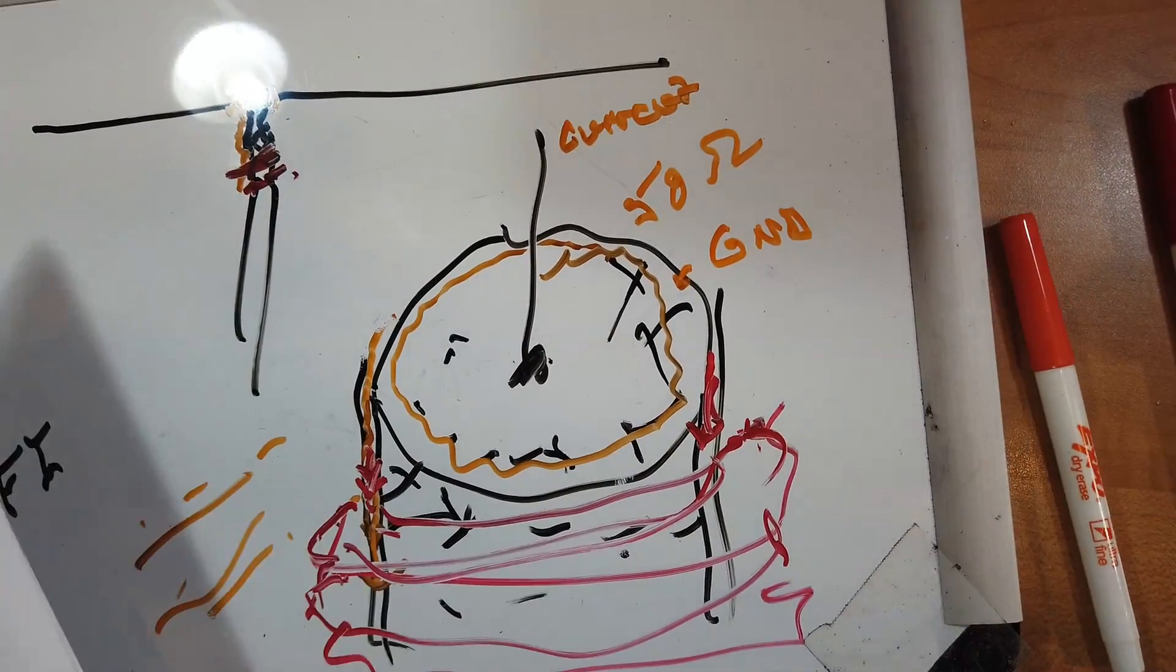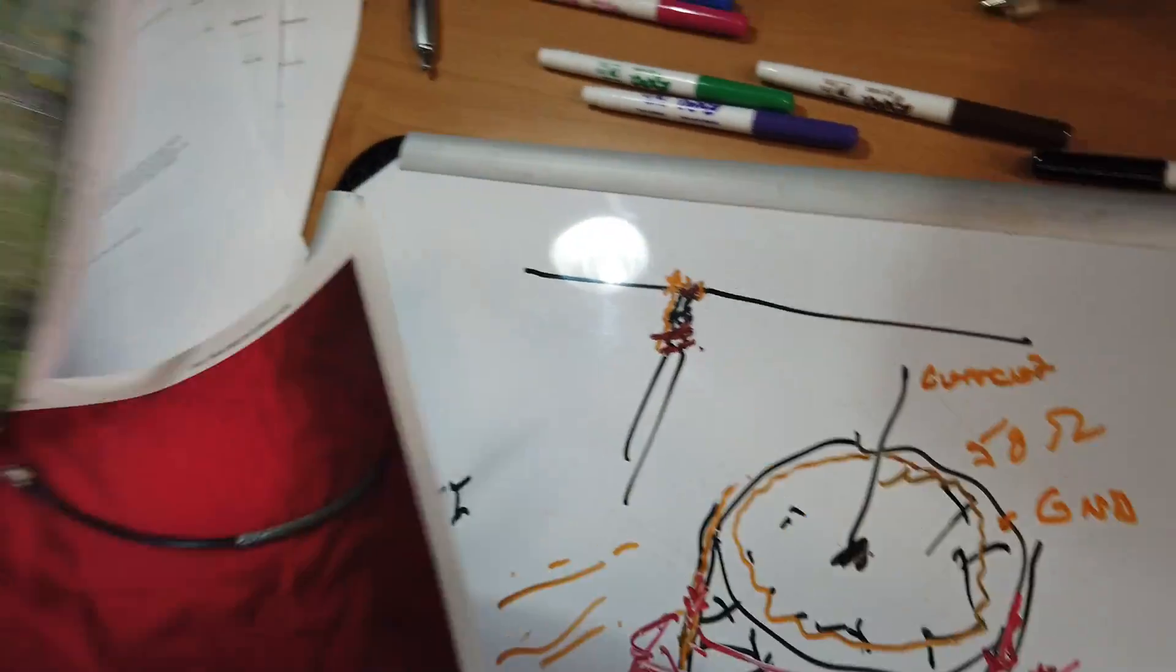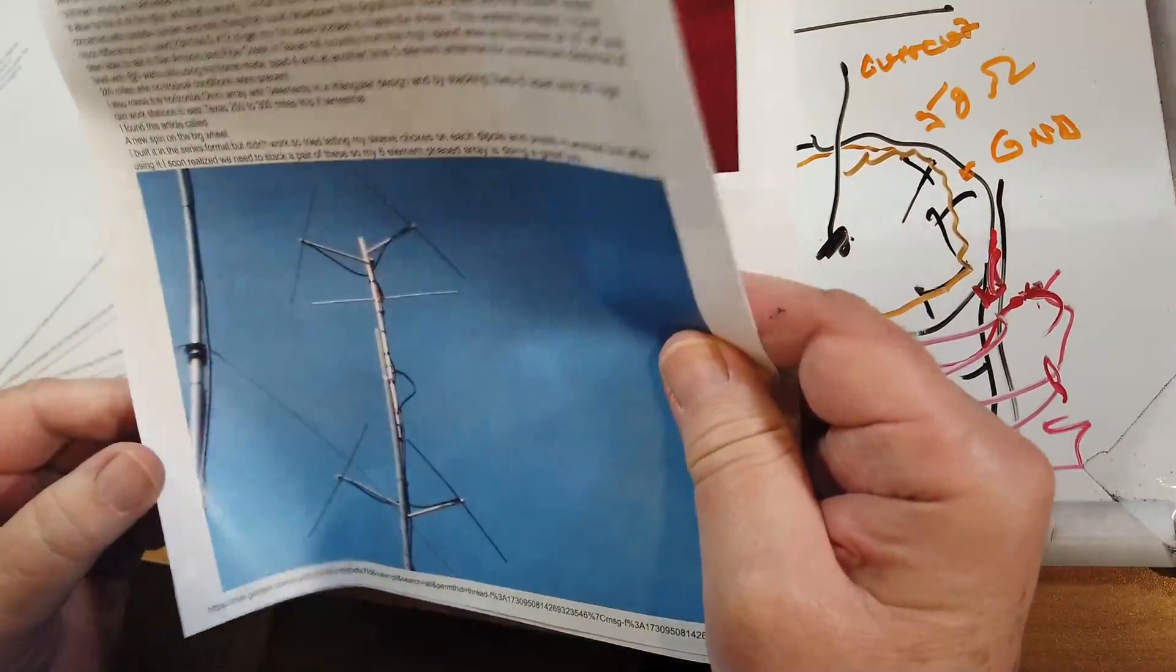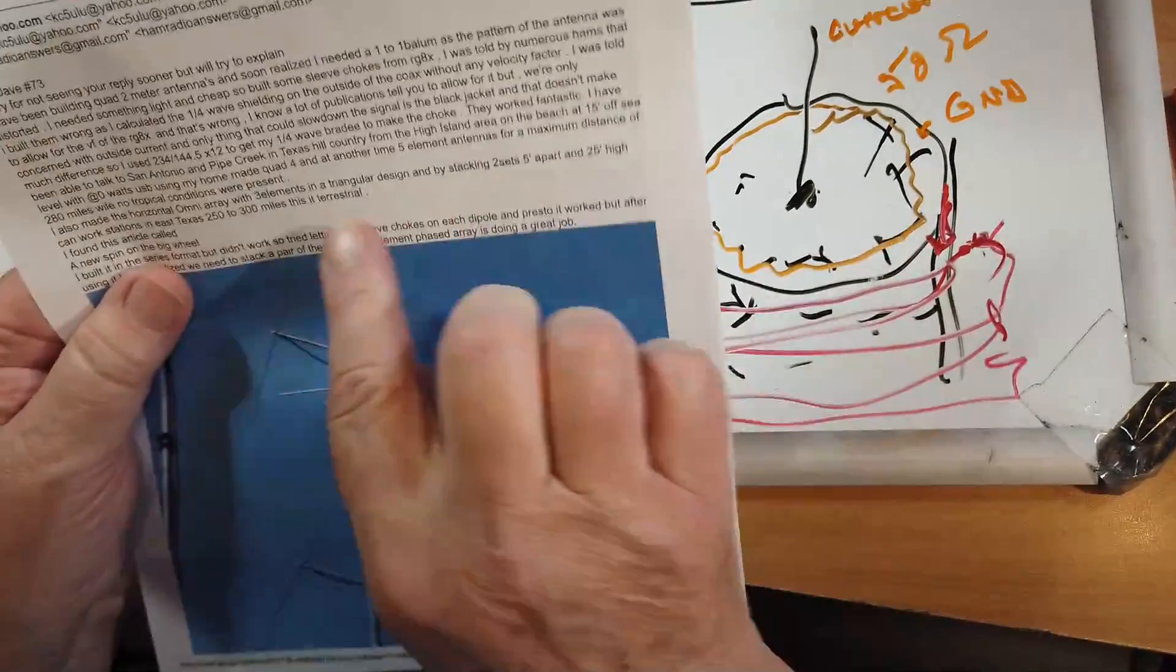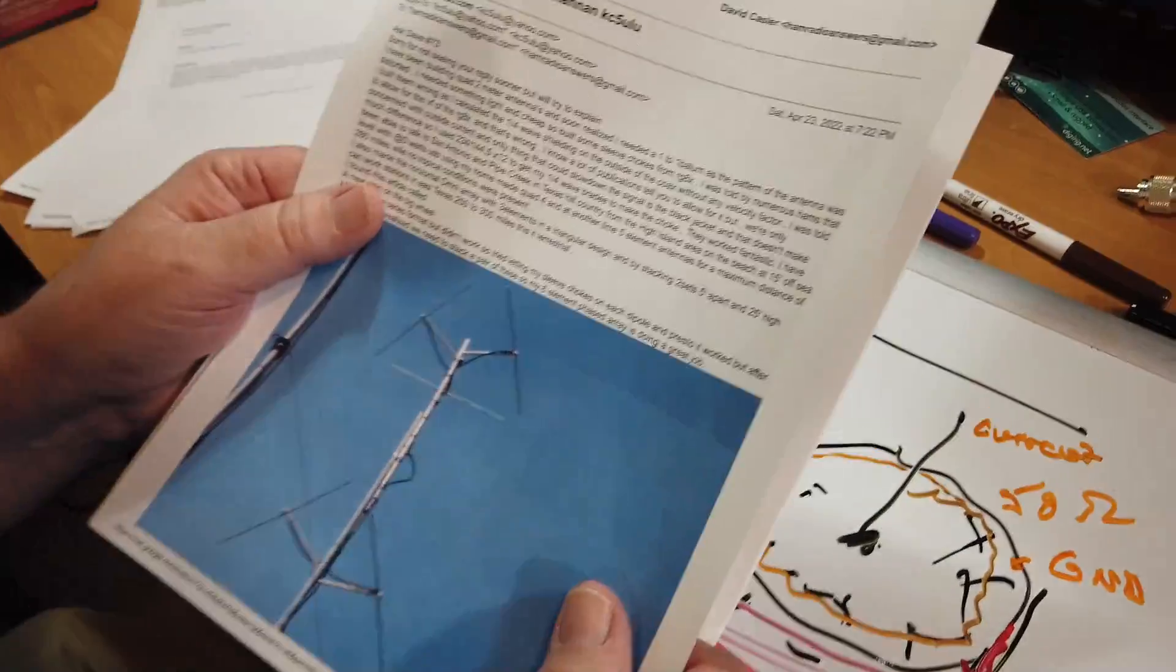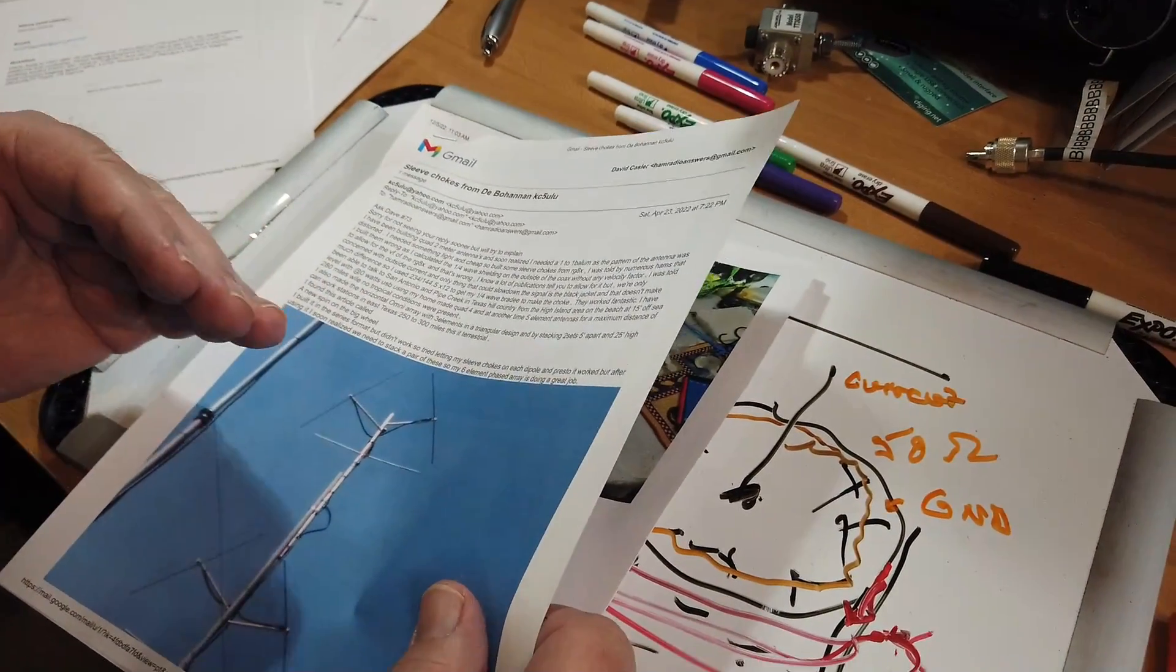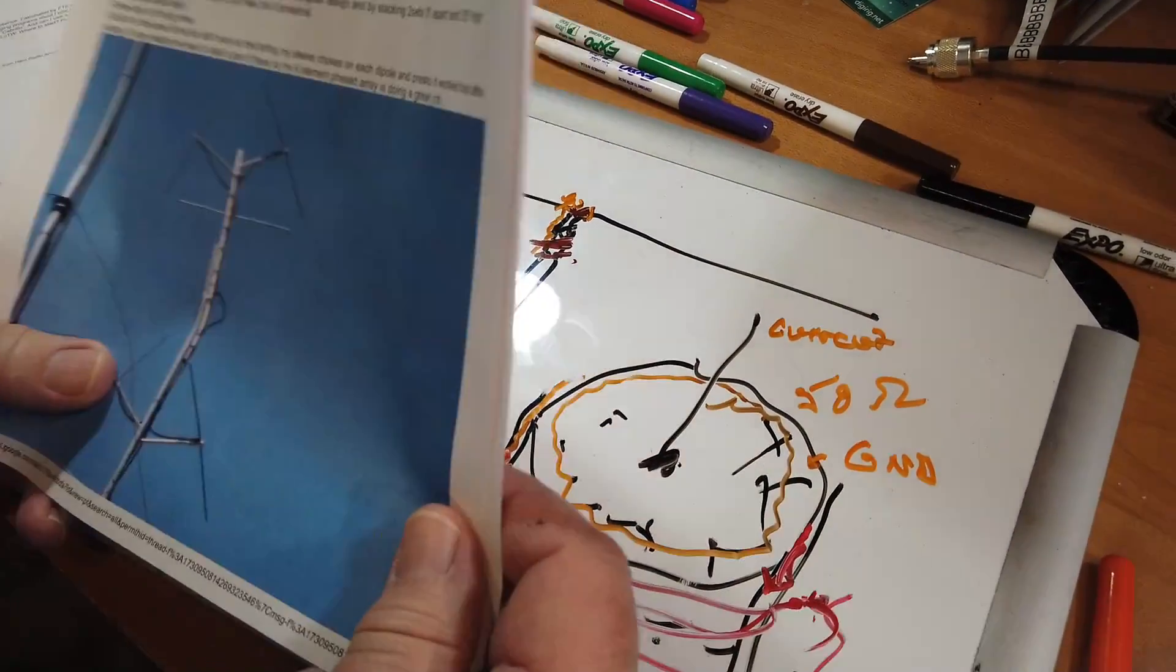Now, what we have here is he's telling me a little bit about his antennas. These are horizontal antennas that are designed to be in a triangular design so that they can transmit unidirectionally. Notice that they're horizontally polarized. So he's doing what's called weak signal work.